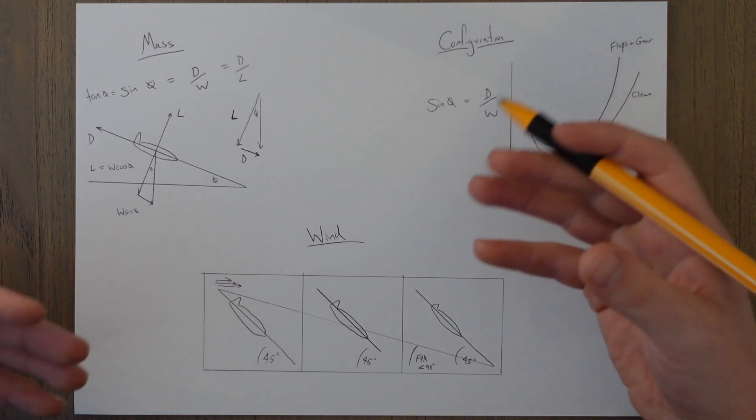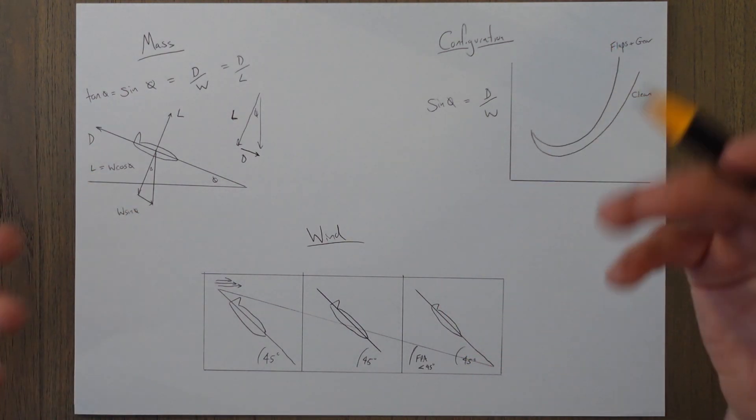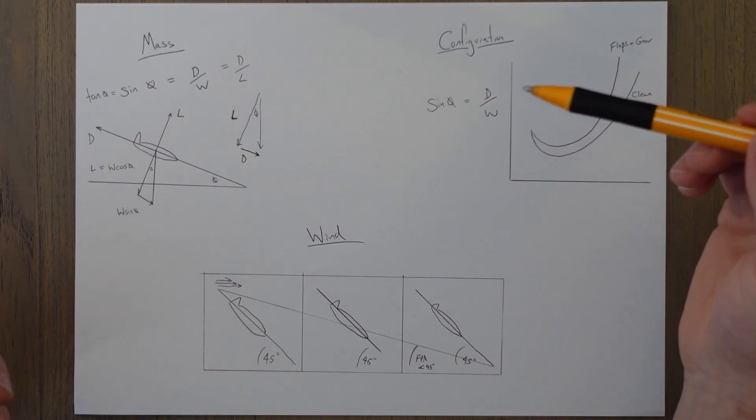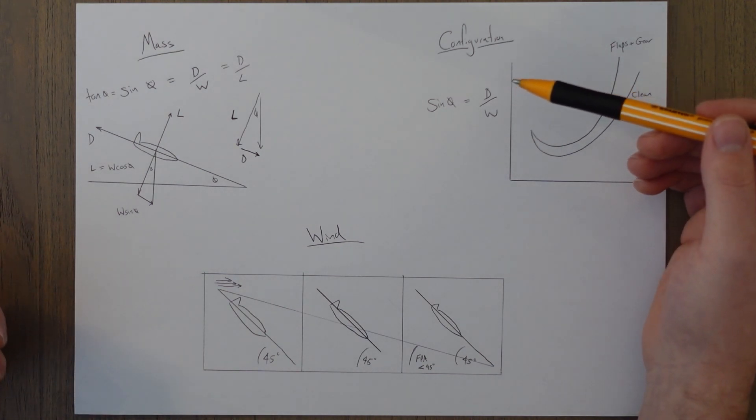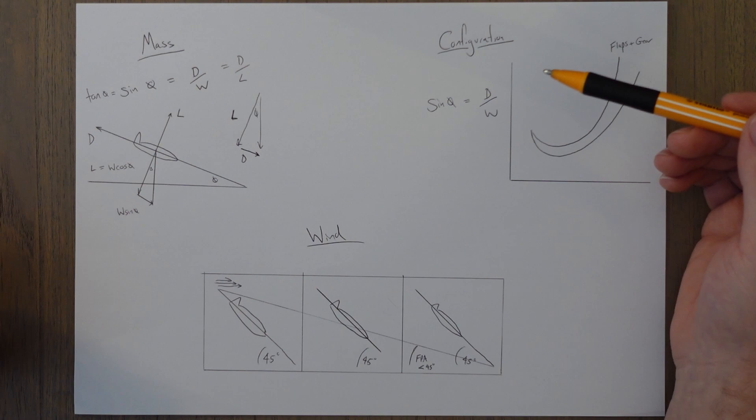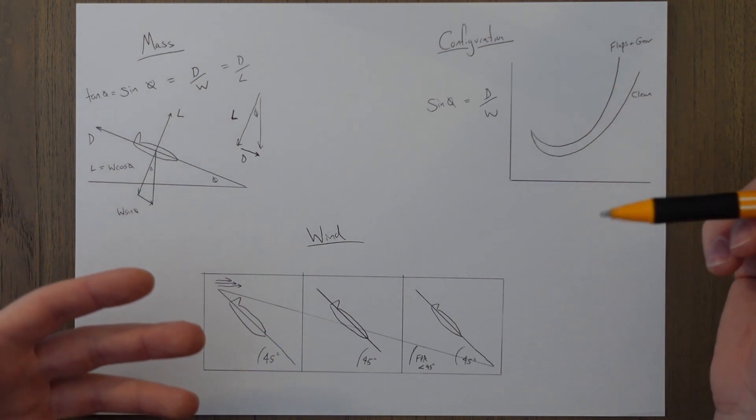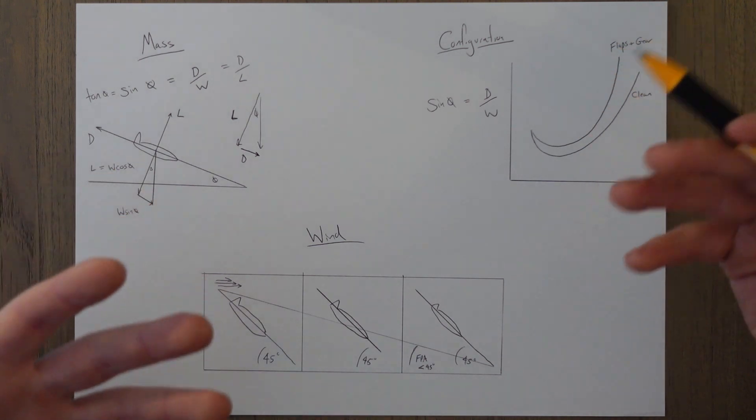Configuration changes, aka if we have the gear out or any flaps out, will basically increase the drag we have. If we have more drag that means a steeper angle and a faster rate of descent, as we have more excess drag than we had before and also more excess power required.